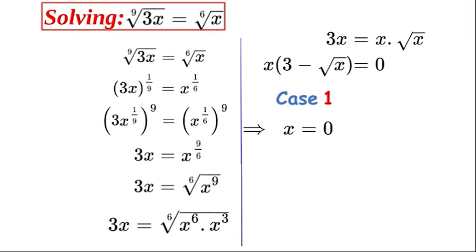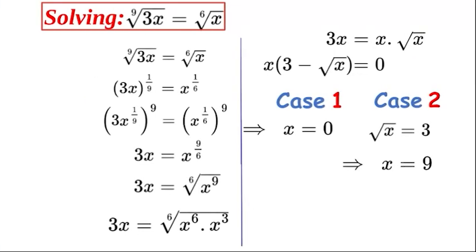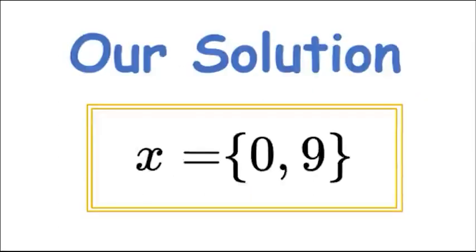So case one, as you can see that x or three minus square root x is equal to zero, so for case one x could be equal to zero. Otherwise, let's look at case two, and if we set the square root of x - bring across the three - so we get root x is equal to three here, and if we square both sides we get a cancellation and x is equal to nine, and that's our second result. Therefore our solution to the maths problem is x is equal to zero and nine.